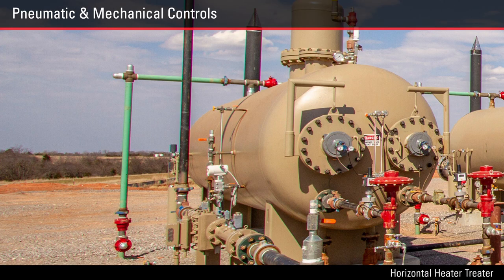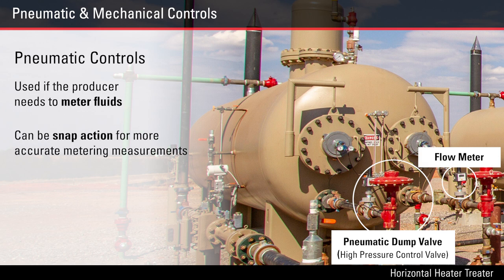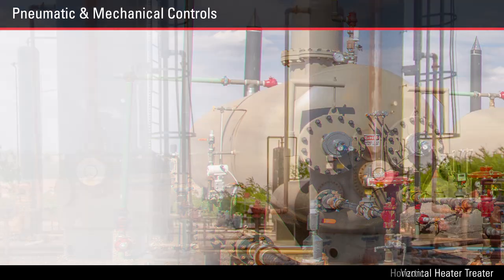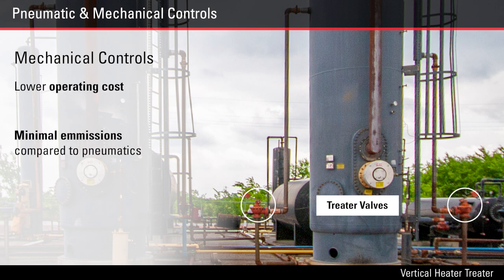A heater treater can be operated using pneumatic or mechanical controls. Pneumatic controls are used if the producer needs to meter fluids — they can be snap action, which provides more accurate measurement in the metering process, and offer more flexibility in sizing. Mechanical controls are still by far the most popular option, with a lower operating cost and minimal emissions when compared to pneumatics.